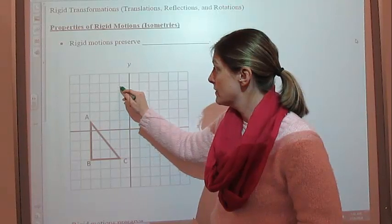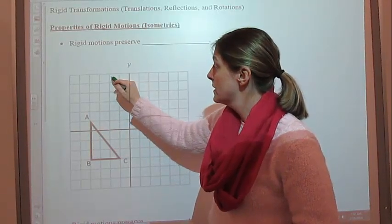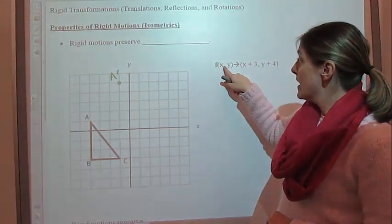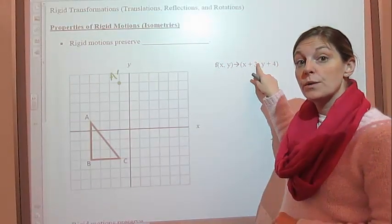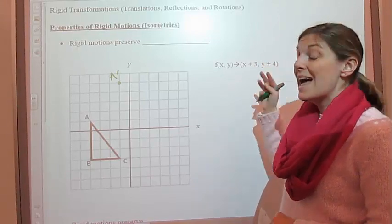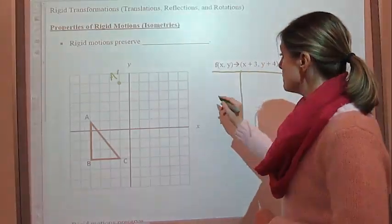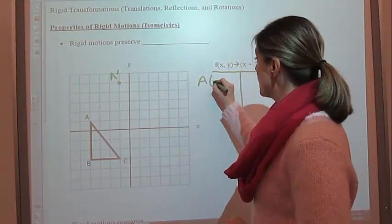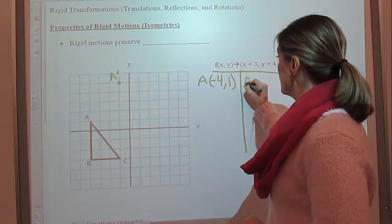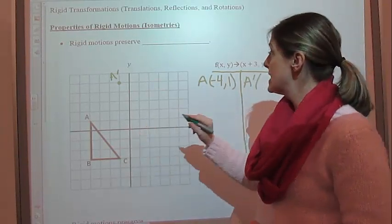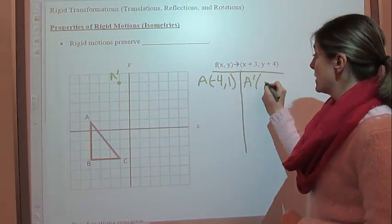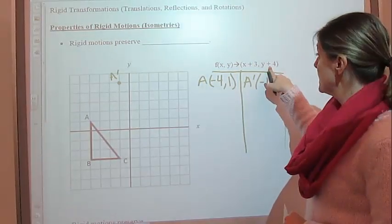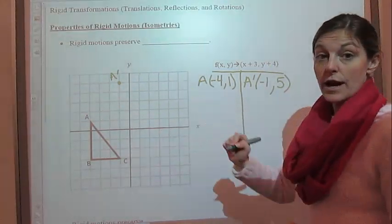So 1, 2, 3, 1, 2, 3, 4 — so here is A prime, because f of x, y is being mapped onto x plus 3, y plus 4. And if you want to look at the table, you can do that. So point A was originally at negative 4, 1, and so A prime is now at negative 1 — because if you plug in negative 4 here, you get negative 1. And if you plug in the 1 here, you get 5. So there's your A prime.